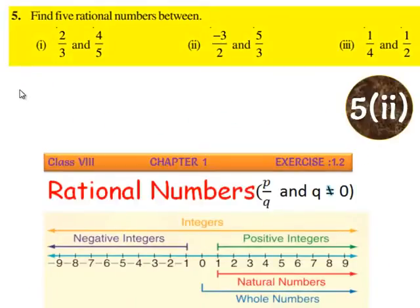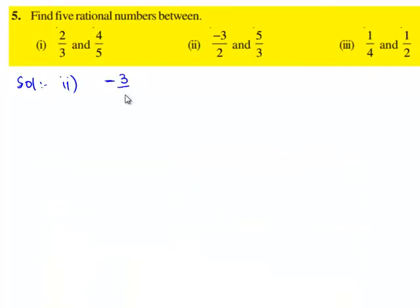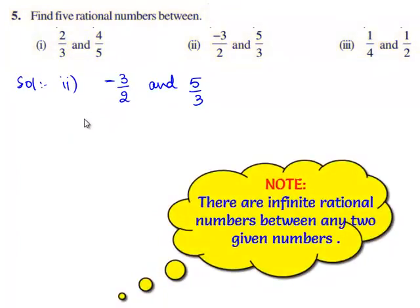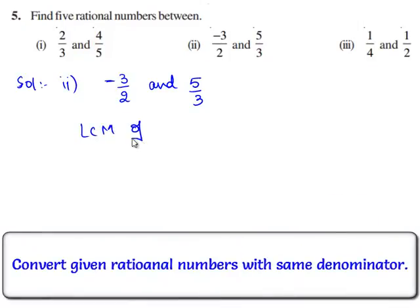Now, let us move on to the second bit of the question. The given two rational numbers are minus 3 by 2 and 5 by 3. Let us express the rational numbers with a common denominator. Therefore, we shall find the LCM of 2 and 3. As we know, the LCM of 2 prime numbers is the product itself. Therefore, the LCM of 2 and 3 is 2 times 3, which is 6.